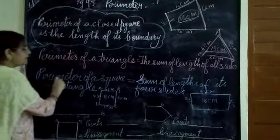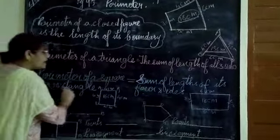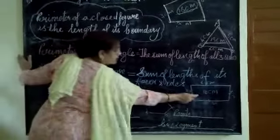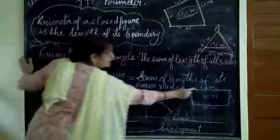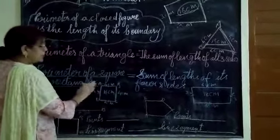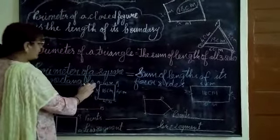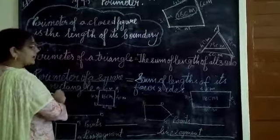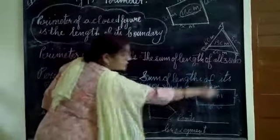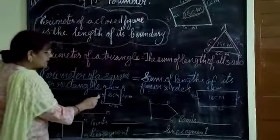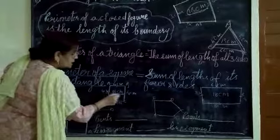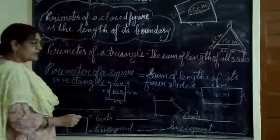Now we will do perimeter of a square and a rectangle, because both are similar — only the opposite sides are equal in a rectangle, and all four sides of a square are equal. The perimeter of a square or rectangle is equal to the sum of the lengths of its four sides. For a square with all sides 4 centimetres, the total is 16 centimetres.